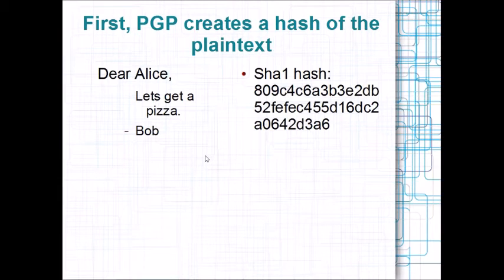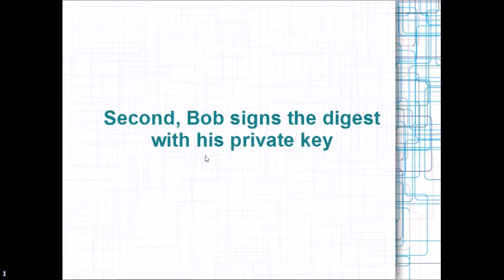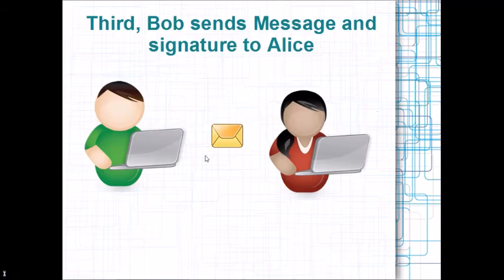The strategy for achieving authentication is to build a digital signature. They take the plaintext and use a hashing algorithm — we use SHA-1, though GPG uses something else — and create a hash of it. Then Bob uses his private key to sign that hash. Bob will then append that signed hash onto the message and send it to Alice.